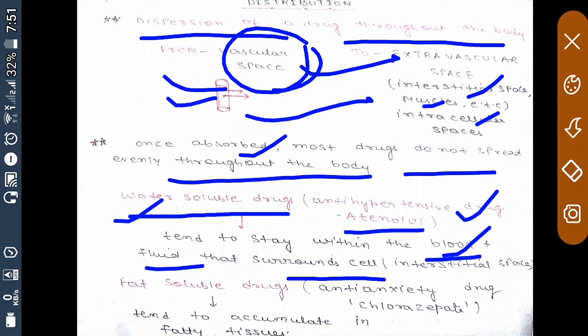Fat-soluble drugs such as anti-anxiety drug chlordiazepoxide tend to accumulate within the fatty tissues. So we have seen that drugs do not spread evenly throughout the body.